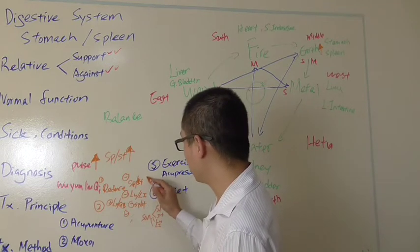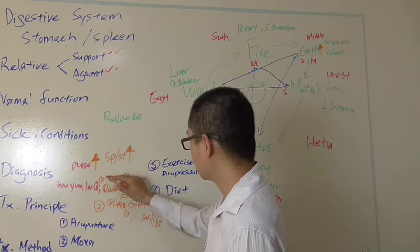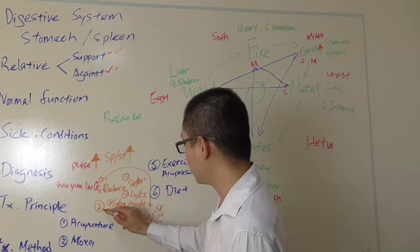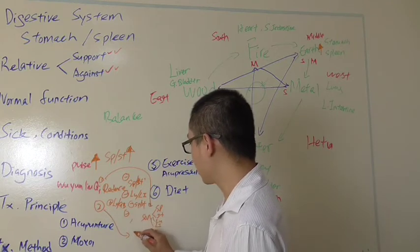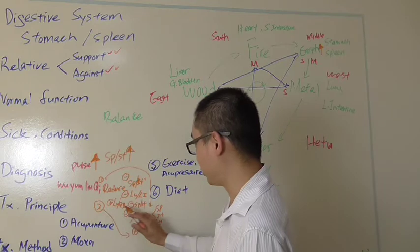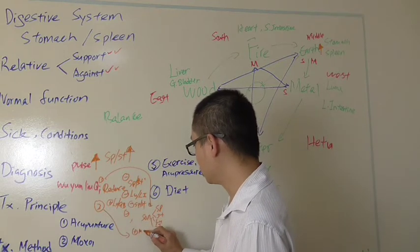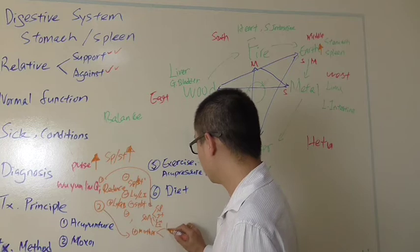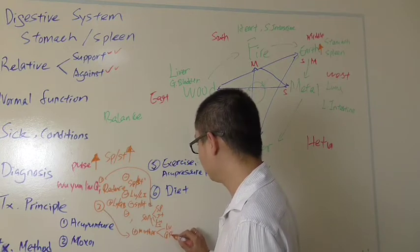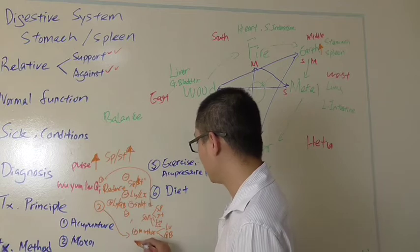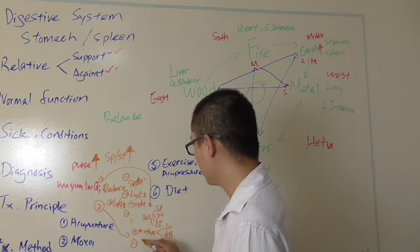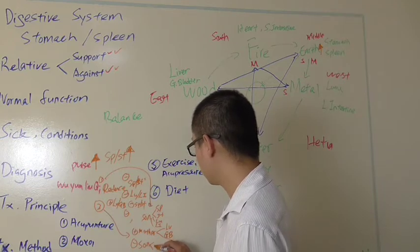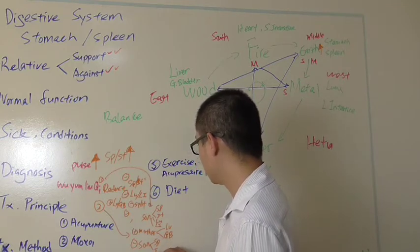Now this is from here, number one, reduce. Over here, number two. What can we do? We can tonify the mother point of liver and gallbladder. We do reduce, reduce the sand point, spleen and stomach. Same as here.